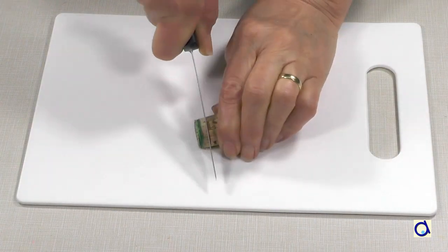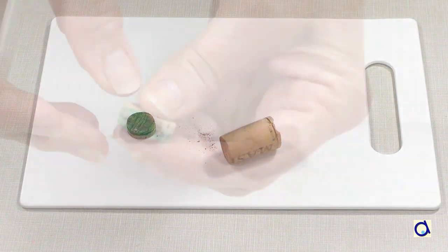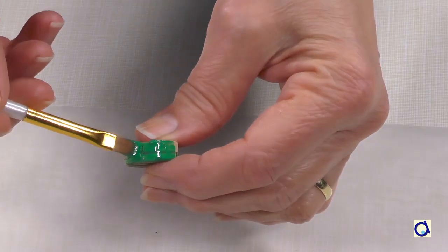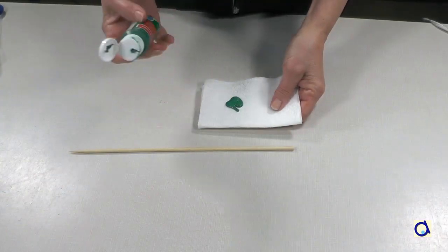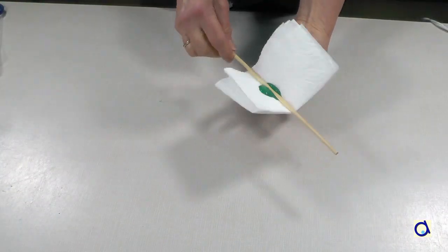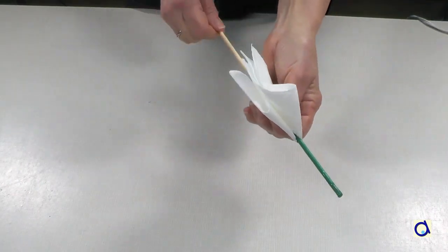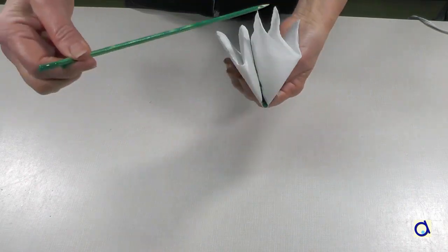To attach the flower to a wooden stem, cut a slice of cork. Paint the slice of cork green. To paint the stem green, take a piece of paper towel and put green paint in the center. Rub the paper towel all along the wooden skewer that will form the flower stem.